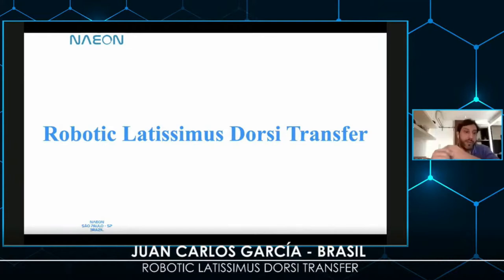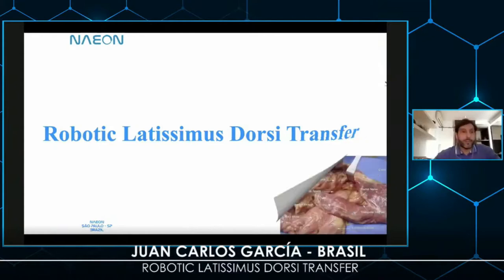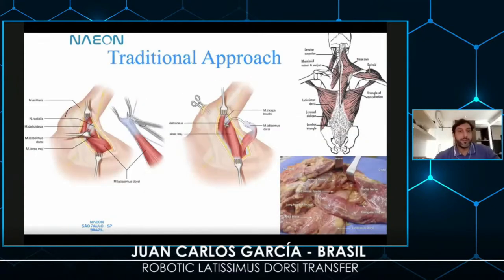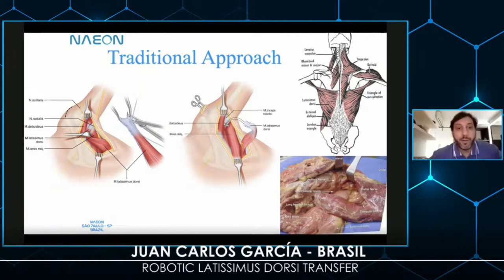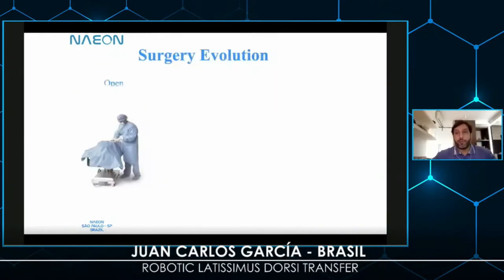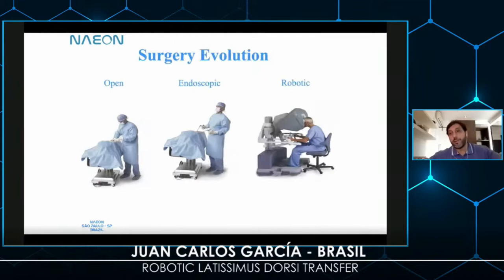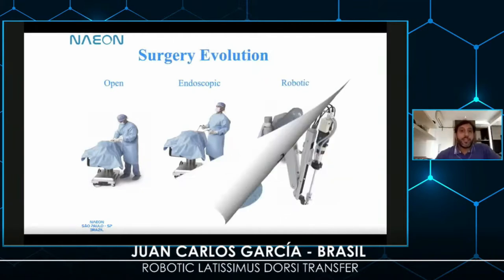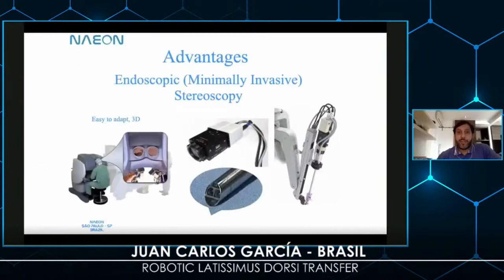This is what we do in phase one when we transfer the latissimus dorsi: a huge open approach with scar tissue formation and pain afterwards. Our idea was to do something smaller, because surgery is an evolution from open to endoscopic, and we think the next step is the robotic one.